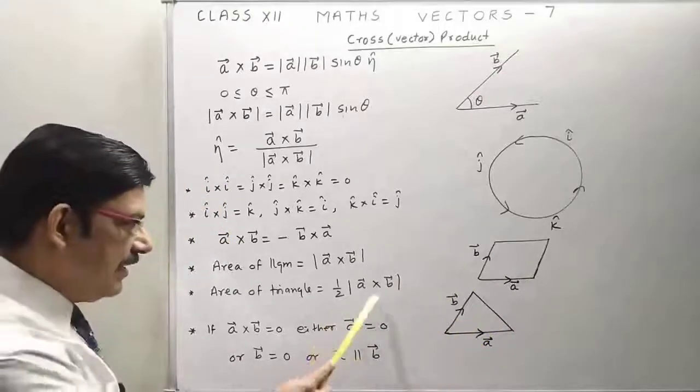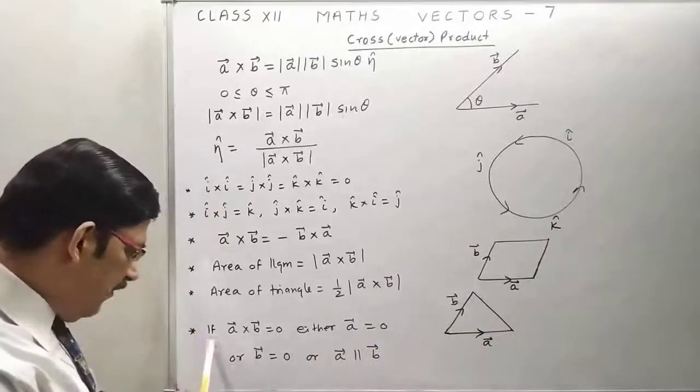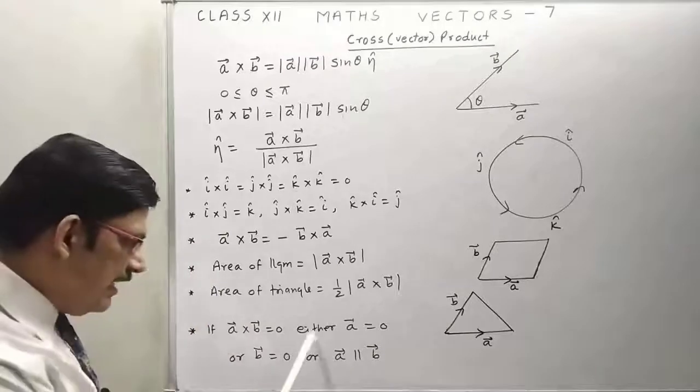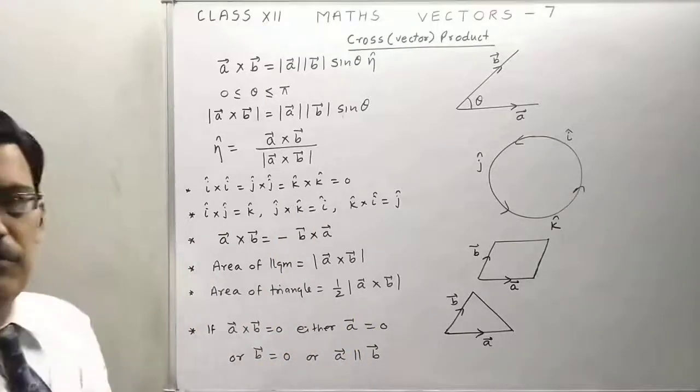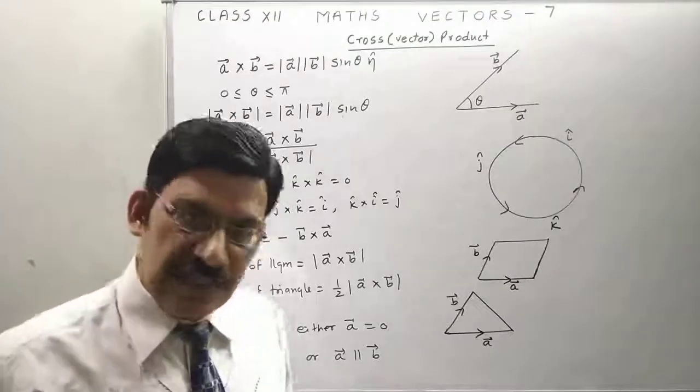The area of a triangle is just half. You can divide it into two parts: half of a cross B. One more thing: if a cross B is 0, then either a equals 0, or B equals 0, or a is parallel to B. So this is the cross product. Thank you.